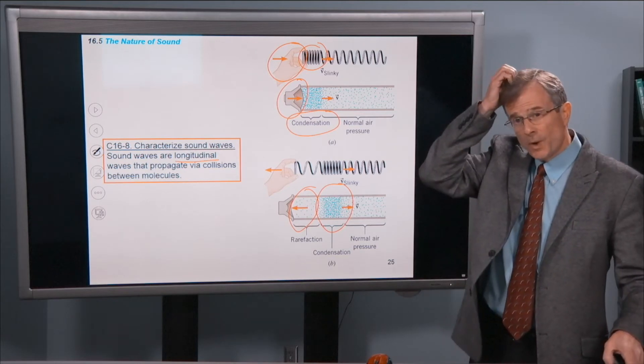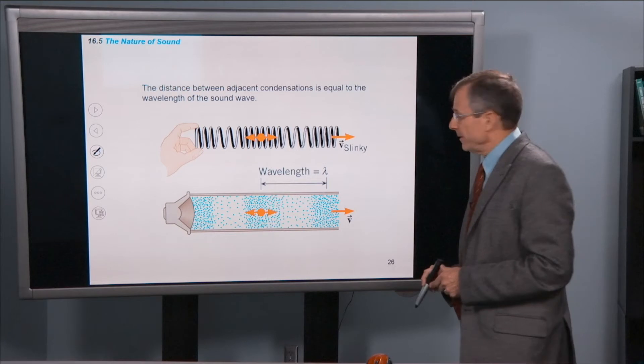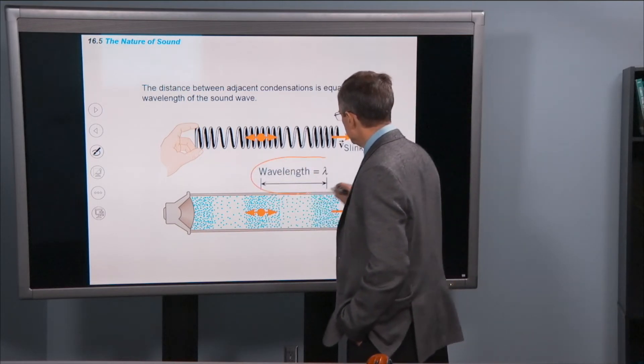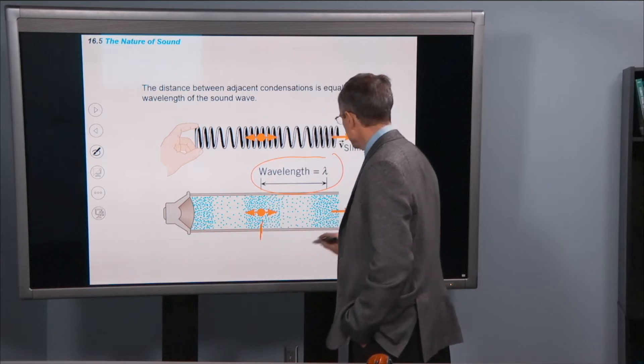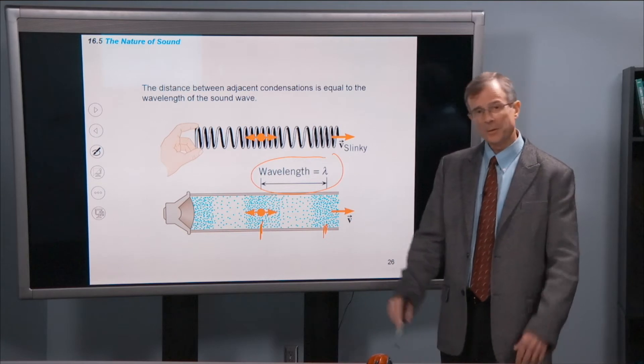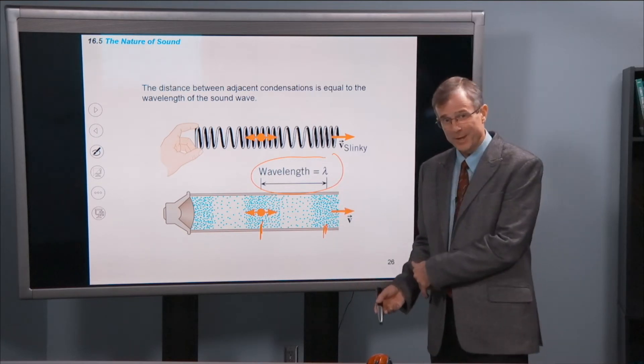So they're longitudinal waves. And the wavelength is the distance between adjacent condensations. Here's a condensation, here's another condensation. The wavelength is just the distance between them. And you say, well, hang on, Dr. Edwards. The wavelength could also be the distance between the rarefactions.